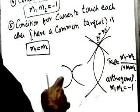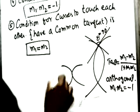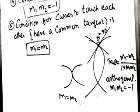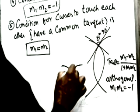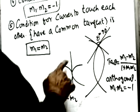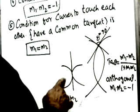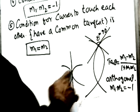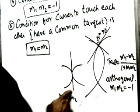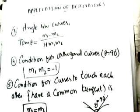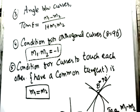If two curves are orthogonal (angle = 90°), the condition is m₁ × m₂ = −1. If two curves touch each other, their slopes are equal: m₁ = m₂. We can also say that two curves have a common tangent at the point of contact if m₁ = m₂. This is the condition for a common tangent or for the curves to touch each other.